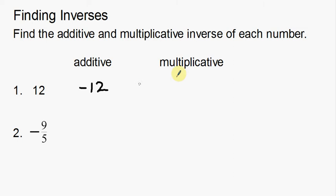Now on the other hand, the multiplicative inverses. Multiplicative inverses are two numbers that are going to multiply to get one. This is a little tougher.